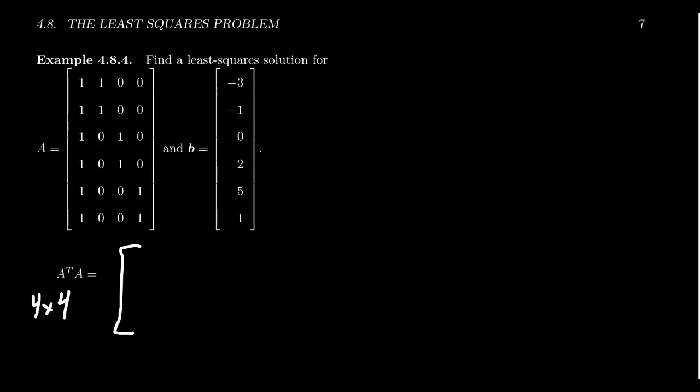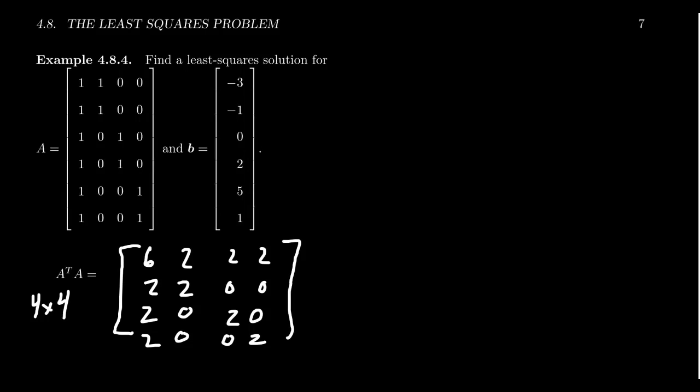But A transpose A will look like 6, 2, 2, 2, 2, 2, 0, 0. We get 2, 0, 2, 0. And lastly, we get 2, 0, 0, 2. Right there. And like I said before, this will always be a symmetric matrix, as you see in front of you.